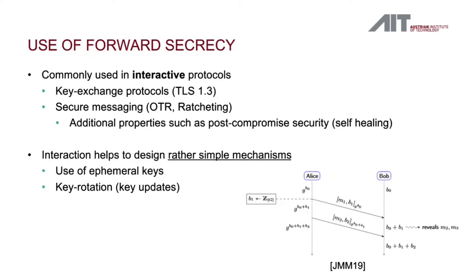The use of forward secrecy in cryptography has quite a long history and it's most commonly used in interactive protocols — for instance, in key exchange protocols like the transport layer security protocol. TLS 1.3 mandates that only cipher suites providing forward security guarantees are used. Another increasingly popular field is secure instant messaging, which started from the off-the-record messaging protocol and is now heavily investigated in terms of ratcheting, starting with the double ratchet from Perrin and Malvin Spike. These protocols, besides forward security, also need to provide post-compromised security — a self-healing mechanism for future security even after a key leaks.